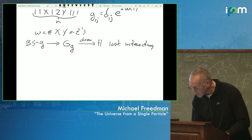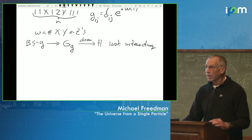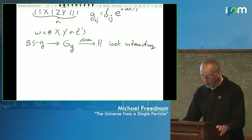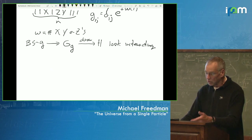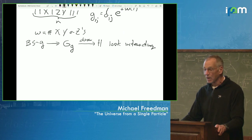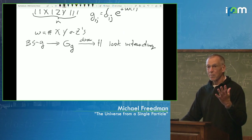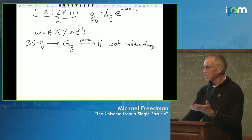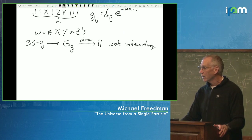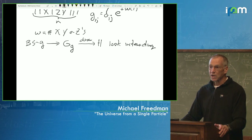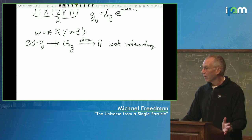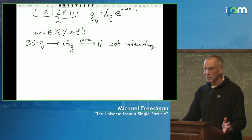What that means is that, with respect to the tensor structure in which we wrote this basis, most of the mass of this Hamiltonian — most of its L2 weight — will be represented in small-body interactions. It will be very rare to draw something that looks like million-body interactions.